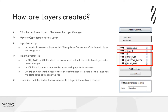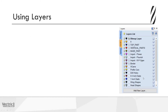When working with certain operations — for example the Dimensions tool or the Vector Texture tool — the software will automatically create a layer. When working with pro software or Aspire, various functions also create layers automatically, such as plate production, creating zero planes, and slicing models.